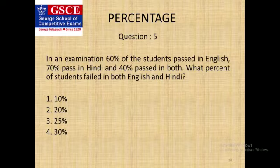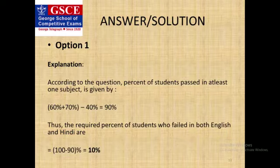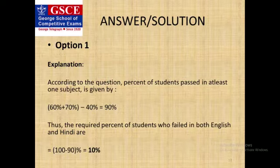Now the fifth one: In an exam, 60 percent of the students passed in English, 70 percent passed in Hindi, and 40 percent passed in both. What percent of students failed in both English and Hindi? Here, 60 percent are those who passed only in English as well as both English and Hindi. Again, 70 percent are those who passed only in Hindi as well as in both English and Hindi, whereas 40 percent are those who passed in both the subjects and is counted within 60 percent and as well as within 70 percent.